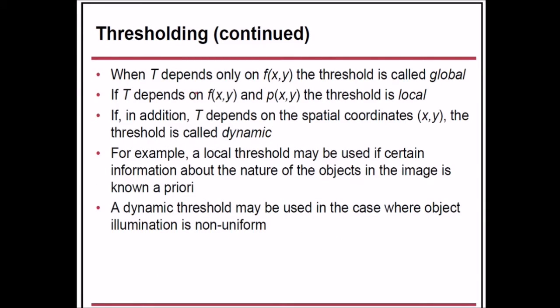When threshold T depends only on f(x,y), the threshold is called global. If T depends on f(x,y) and p(x,y), then the threshold is termed local. If, in addition, T depends on spatial coordinates like (x,y), the threshold is termed dynamic. So three types of thresholds are there.